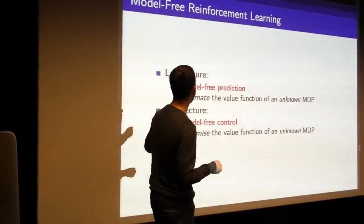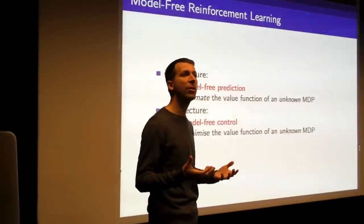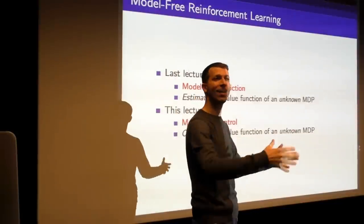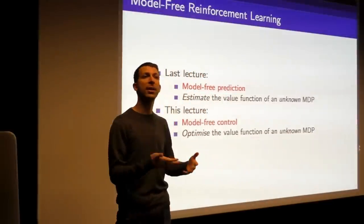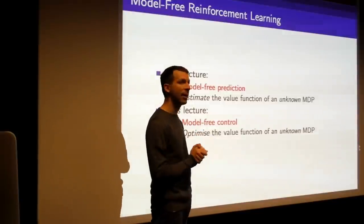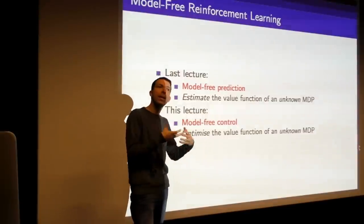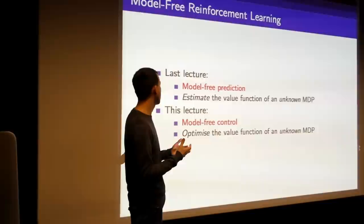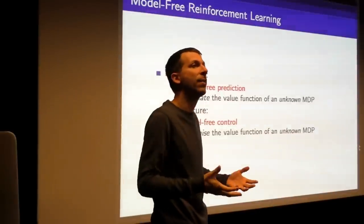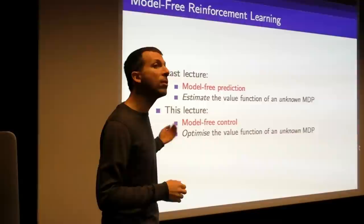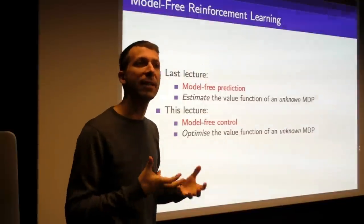Last lecture, we basically built up the toolkit we're going to need. We saw how to do model-free prediction — how to evaluate a given policy using Monte Carlo evaluation and temporal difference learning — to estimate the value function of some unknown MDP. Now that basic toolkit is what we're going to use to do control methods, where we want to not just estimate the value function but actually optimize it: find V-star, find Q-star, find the best possible behavior. We'll use the same tools, iterating them to get the best possible behavior.